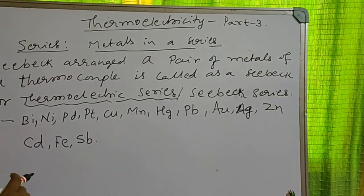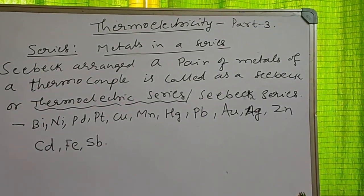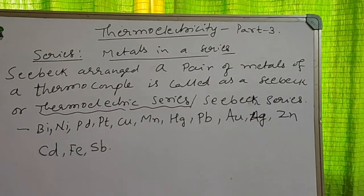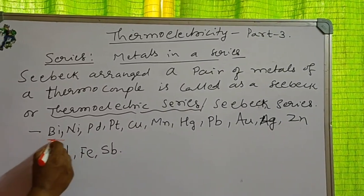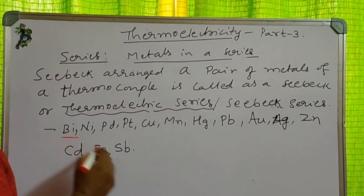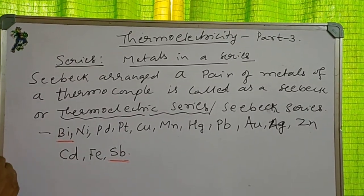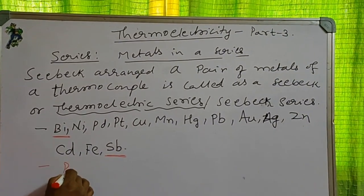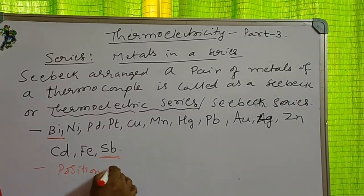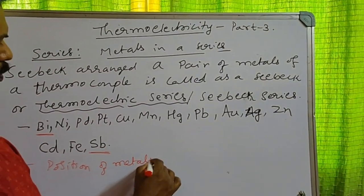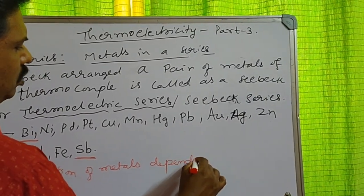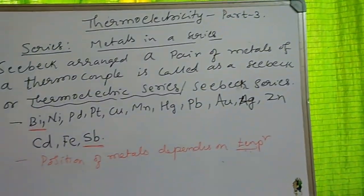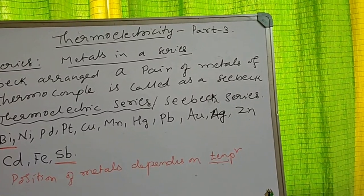Seebeck arranged different metals in a systematic manner; these are called the thermoelectric series or the Seebeck series of metals. The series starts with bismuth and ends with antimony. This series depends upon temperature — the position of metals depends upon the temperature of the metal.